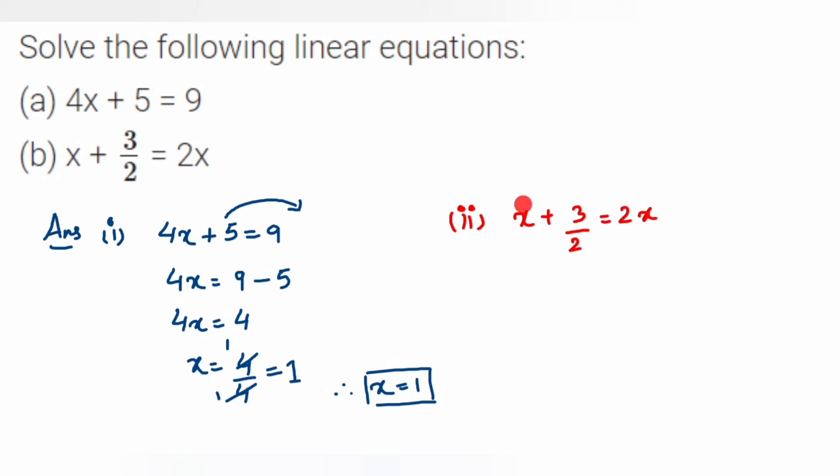We're going to transpose x to the other side because already here 2x is present. So when we transpose x to the other side, we'll get 3 upon 2 is equal to 2x minus x. So 2x minus x is x.